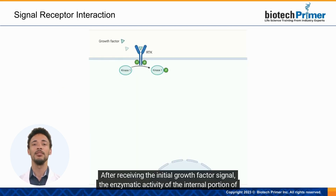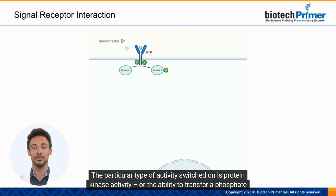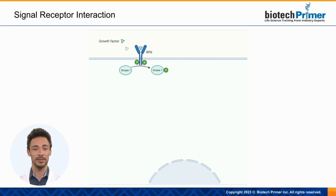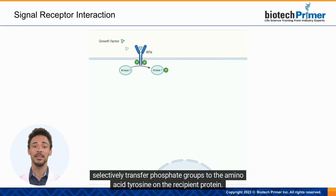After receiving the initial growth factor signal, the enzymatic activity of the internal portion of the growth factor receptor is activated. The particular type of activity switched on is protein kinase activity — the ability to transfer a phosphate group from one molecule to another. These types of receptors are sometimes referred to as receptor tyrosine kinases, because they selectively transfer phosphate groups to the amino acid tyrosine on the recipient protein.